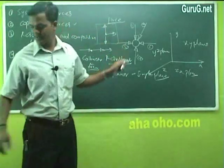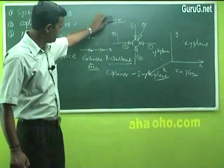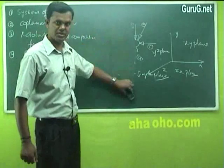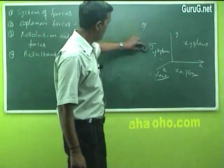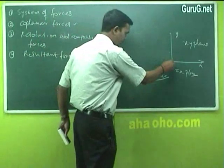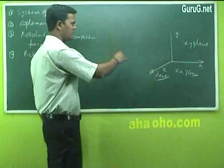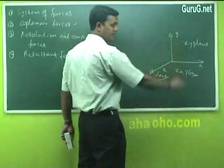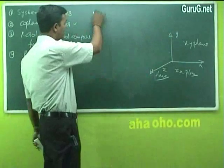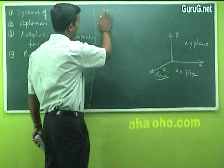The purpose of studying this is to find out the resultant when a number of forces are acting on a body — whether one force, two forces, three forces, or n number of forces. How to find out a resultant is the question. For this, basically there are a number of laws, like Newton's first, second, and third law. First we will see what is called the parallelogram law.